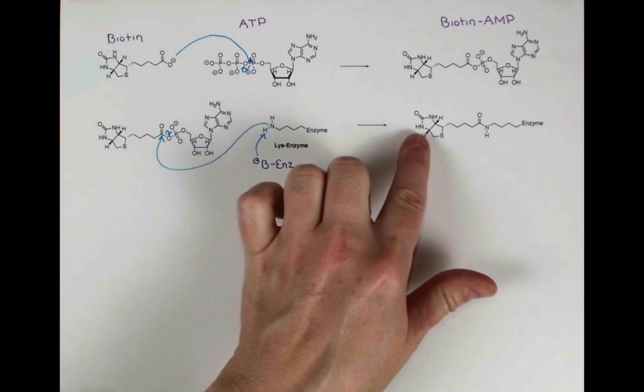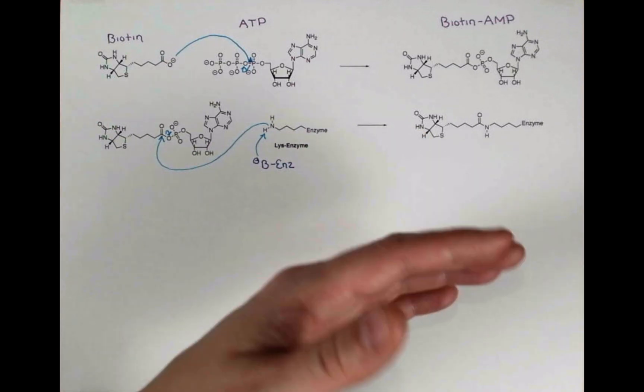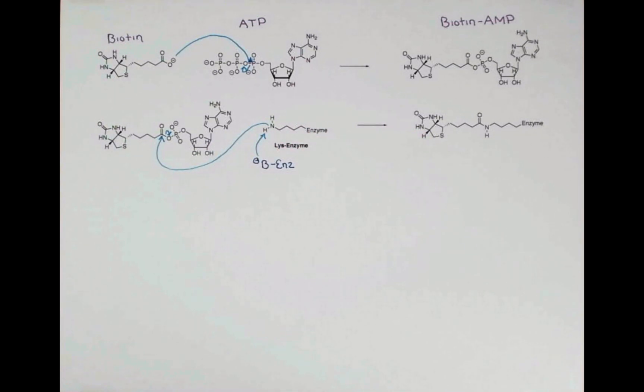Now the biotin is going to react in such a way that a CO2 group is transferred onto this nitrogen and then can be transferred onto another molecule. I'm going to draw an abbreviated structure of biotin, and let's walk through that process.